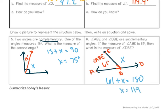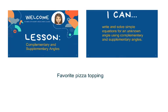In today's lesson, we have reviewed a lot of vocabulary and learned how to write and solve equations. Go ahead and write in two to three complete sentences what you have learned from this lesson. We learned about complementary and supplementary angles, and you are now able to write and solve simple equations for an unknown angle using complementary and supplementary angles. Let me know if you have any questions — bye guys!